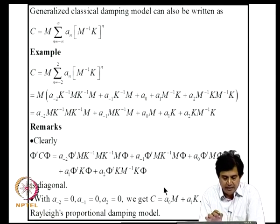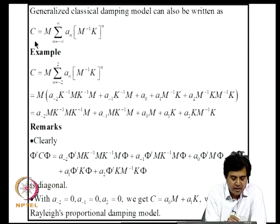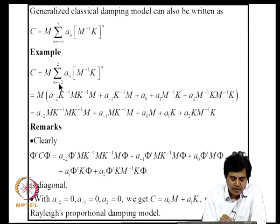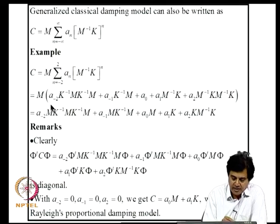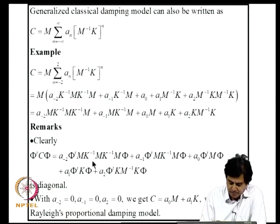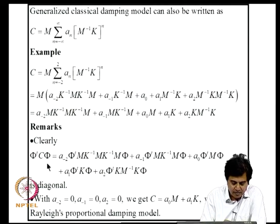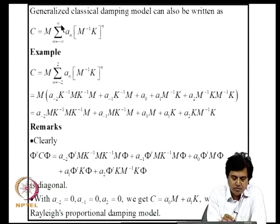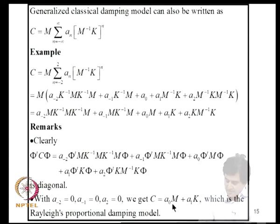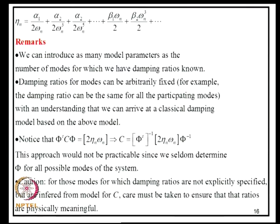The two infinite families of orthogonality relations can be combined into a single equation: C = M · sum_{n=-infinity}^{+infinity} a_n · (M-inverse·K)^n. For example, taking 5 terms from n = -2 to +2 and expanding, Phi-transpose·C·Phi is diagonal by virtue of the orthogonality relations. Taking only n = 0 and n = 1 recovers the familiar Rayleigh damping model C = A_0·M + A_1·K, so this generalized model embeds Rayleigh damping as a special case.